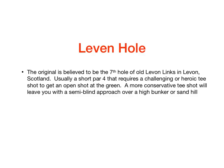The original Leven hole is believed to be the 7th at Levin Links Golf Club in Scotland. The hole is a short par 4 that requires a heroic type of tee shot to an area in the fairway that will provide an open look to the green. A safer route or shot will result in a second shot that is either blind or semi-blind.